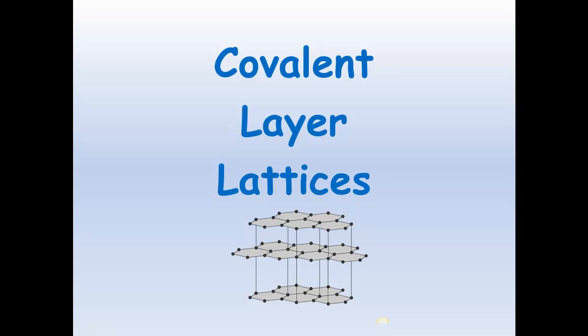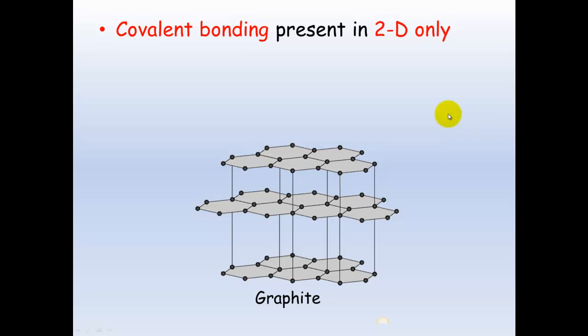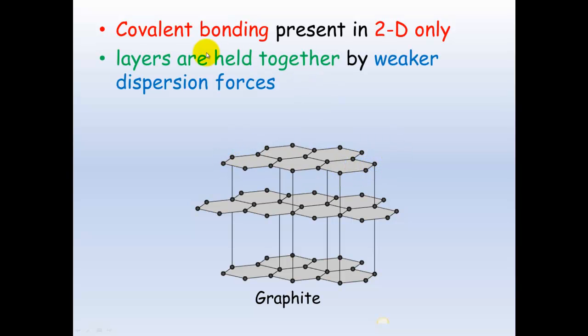Covalent layer lattices are the other type of lattice that non-metals can make with one another. This is covalent bonding in two dimensions only, so just in one plane. These layers, or this two-dimensional plane here, are held together by weaker dispersion forces. And this is an example which is graphite.